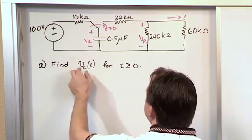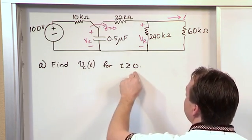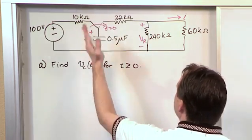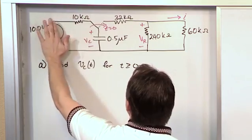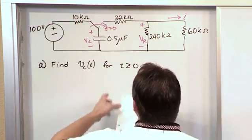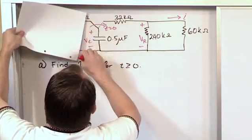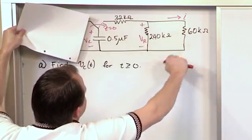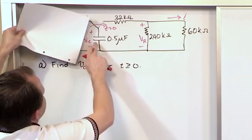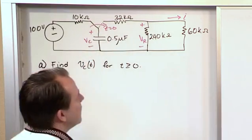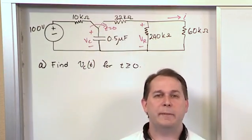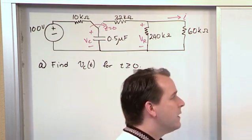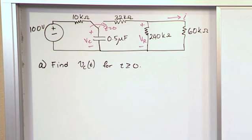And part A says find VC of T for time greater than zero. So when the switch moves, that happens at zero. Soon as the switch moves, then basically we've disconnected this initial part of the circuit. And so after the switch moves, we're only really left with all this stuff. But the capacitor will start discharging through this resistor network, and so we're trying to find out what's the voltage across this capacitor as a function of time. We expect it to be an exponential decay of some sort because RC circuits always decay exponentially. But the devil's in the details, so to speak.